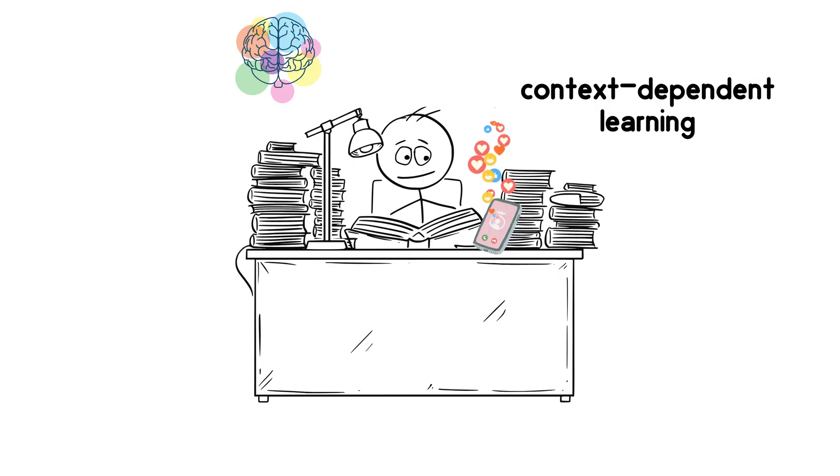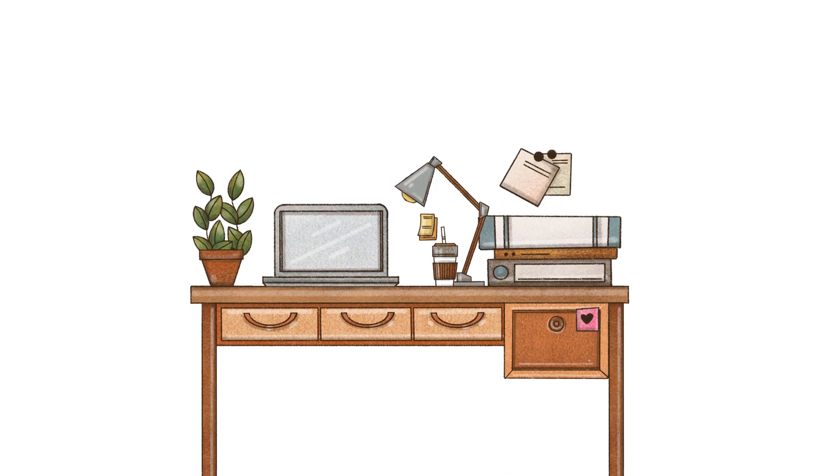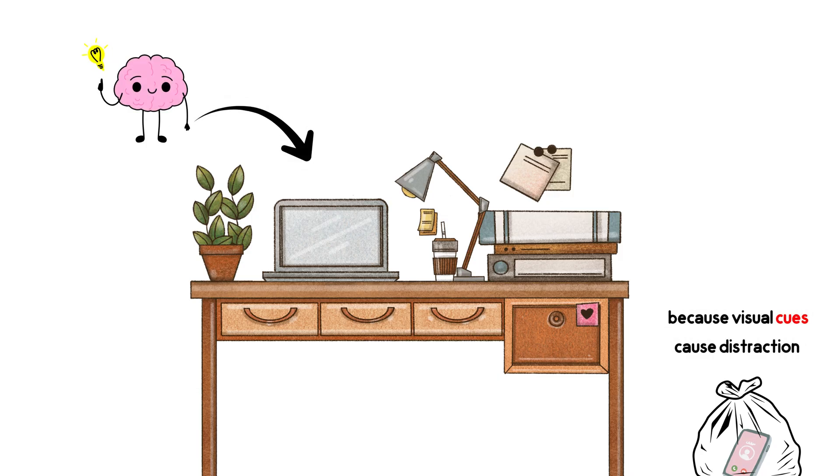It's called context-dependent learning, meaning, when your learning environment and your exam environment are similar, you remember better. The trick? Create a dedicated exam zone in your room. Same lighting, same desk setup. Put your phone somewhere you can't see it, because visual cues cause distraction.